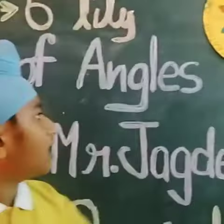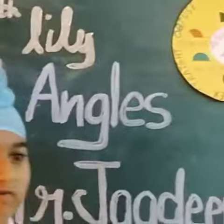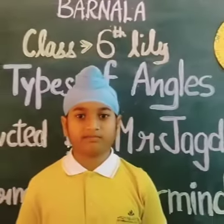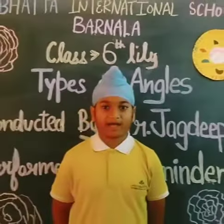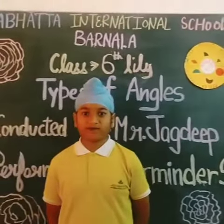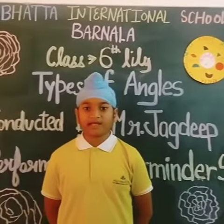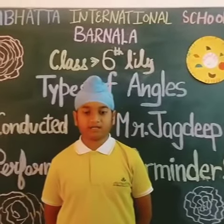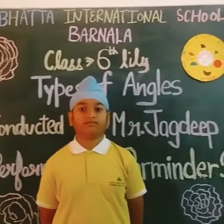Number 6: full or complete angle. The angle of 360 degrees is called a full or complete angle. Thank you.